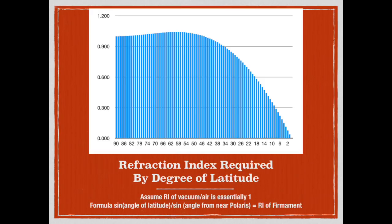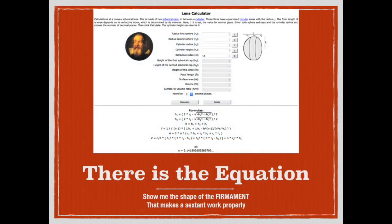In order to have the angle of Polaris match the actual degree of latitude, this is the graph of the refractive index by degree of latitude all the way from the North Pole to the equator. Since these do not match up to the actual degree of latitude, there has to be some form of refraction going on through the firmament or the dome. I've even been so kind as to give you the equations you need to calculate the size and shape of the lens required.